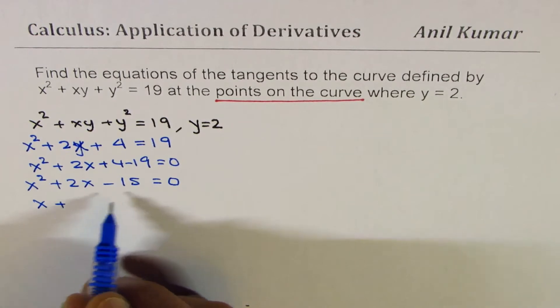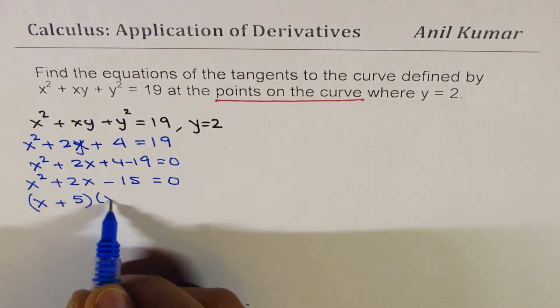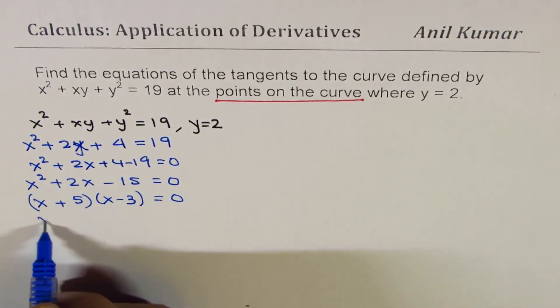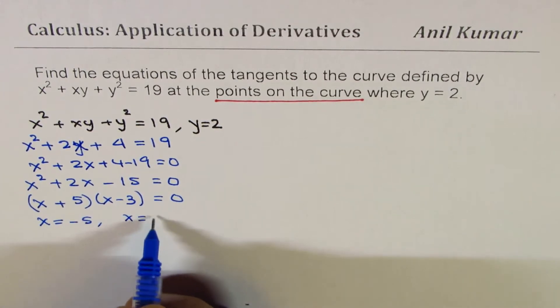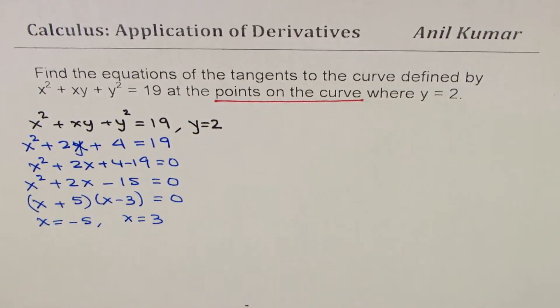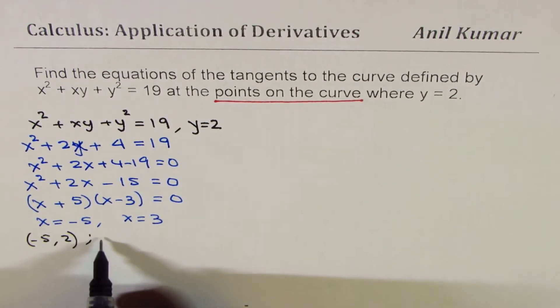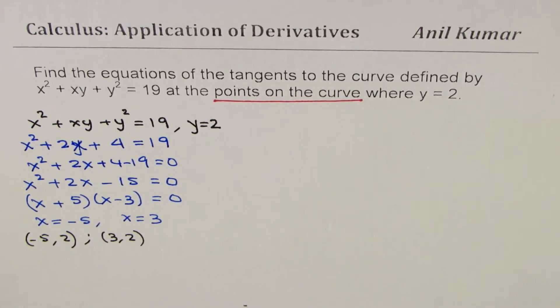So, this can be factored. We can write this as 5 × 3 is 15. So, 5 positive, 3 negative equals to 0. So, that gives you two values of x. One is -5, the other one is 3. So, that means the points on this curve are (-5, 2), and the other point is (3, 2). So, both these points are on the curve. I hope this part is absolutely clear.